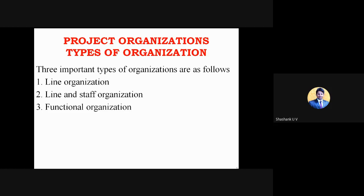Moving on to the next part — project organizations. There are three different types of organizations you can see in a project. The first one is line organization, the second is line and staff, and the third is functional organization.